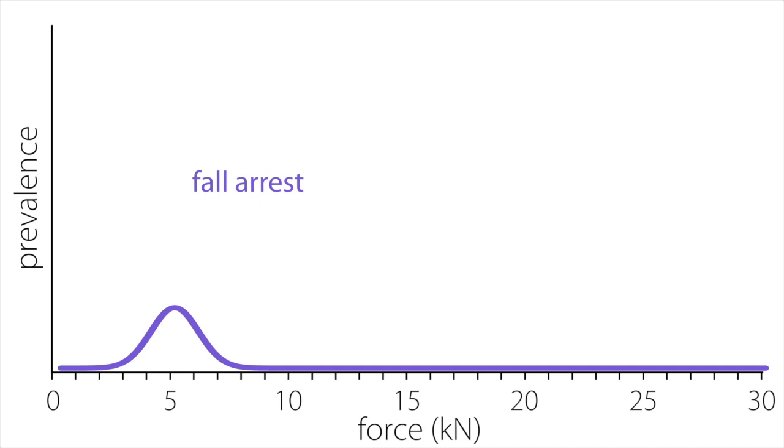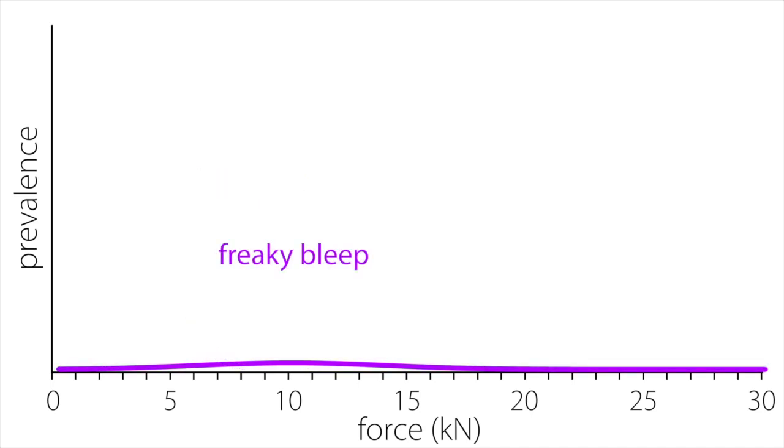Expected arrest forces range from three kilonewtons to eight kilonewtons. Forces in the ten to twelve kilonewton range have been implicated in climbing accidents. Most fall arrests produce forces below six kilonewtons, and the vast majority of fall arrest jobs produce forces below seven kilonewtons.